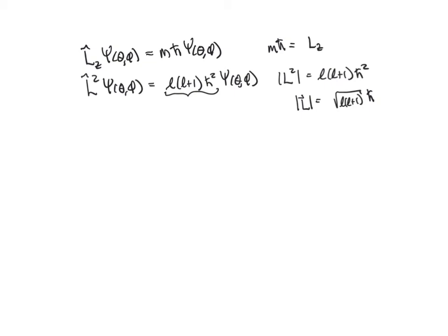The values of the quantum numbers that give acceptable solutions are: L can be 0, 1, 2, etc., and m can be any integer from minus L up to 0 up to plus L. So m is restricted based on the value of L, and L can be any non-negative integer.